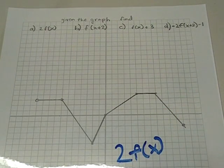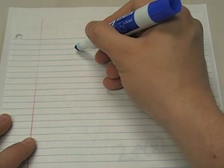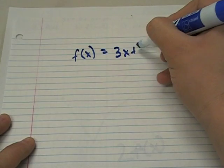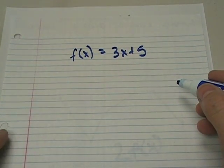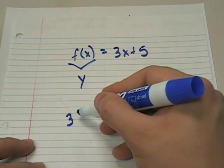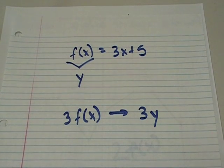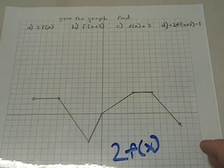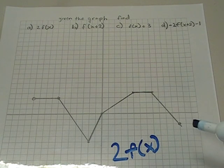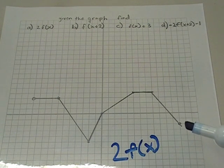So we're looking at 2f(x). Now, what does this mean? You've got to remember that when you have a function like f(x) equals 3x plus 5, this can readily be substituted for y. So when I tell you 3f(x), what I'm really saying to you is 3y. So when I say find 2f(x), what I'm saying is I need you to multiply the y value by 2.